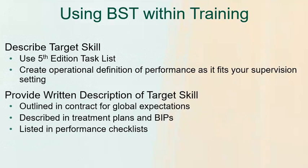We want to provide the written description of the target skill. For global things, that's where we're outlining it in that contract — globally, I want you to demonstrate all the skills on the fifth edition task list. These might also be described in the treatment plans or the behavior intervention plans. So if I want someone to be able to implement a token system, I might provide the written description of that, and that is what they're following to practice the implementation. Or you could list these things out in a performance checklist — if I'm going to come in and watch you and I want to see you use prompting and fading strategies, then I'm going to define prompting and fading and have them on the checklist for when I do my observation.